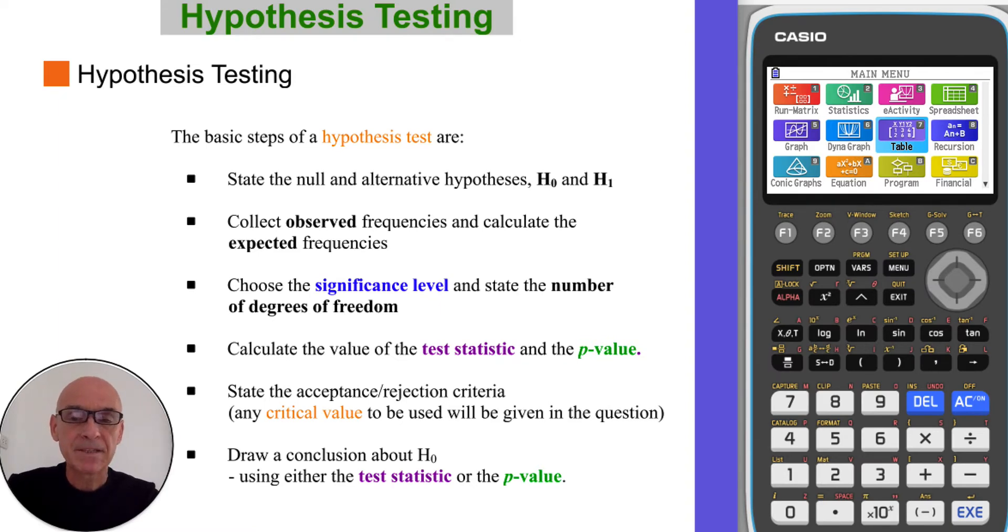So there are six basic steps to a hypothesis test. In the first step we state the null and the alternative hypothesis. In the second step we will calculate the expected frequencies based on the null hypothesis being true. The observed frequencies will be given in the question in the form of a table. In the third step we choose our significance level. And this basically then sets a cutoff value called the critical value. And using that critical value we can make a decision as to whether to accept the null hypothesis or whether to accept the alternative hypothesis.